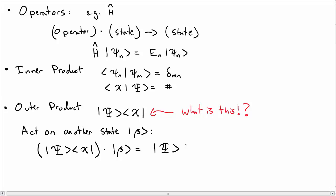Well, if I write that out, I have psi, and then this turns into an inner product between chi and beta. But the inner product is just a number, and psi is just a state or a vector, and so what I get back is just another state or another vector.